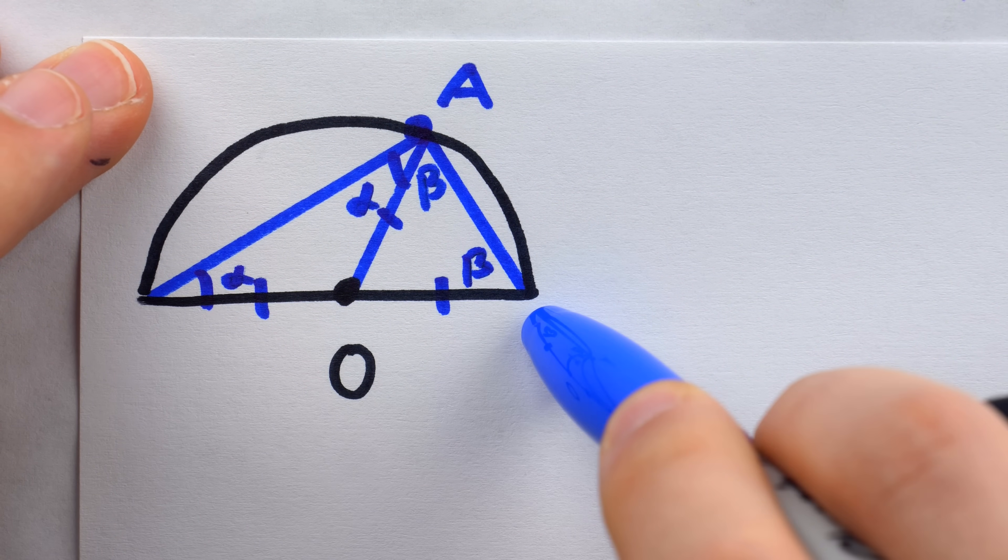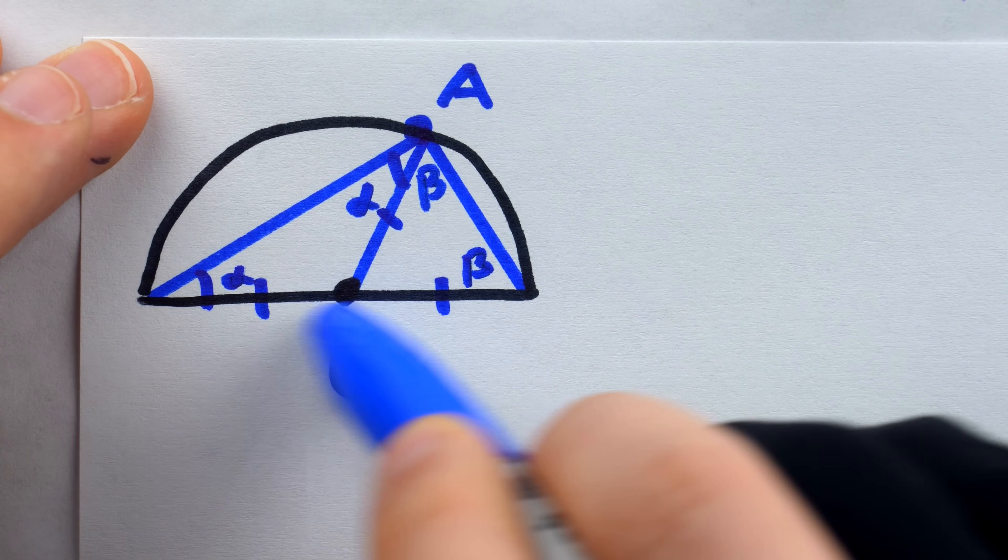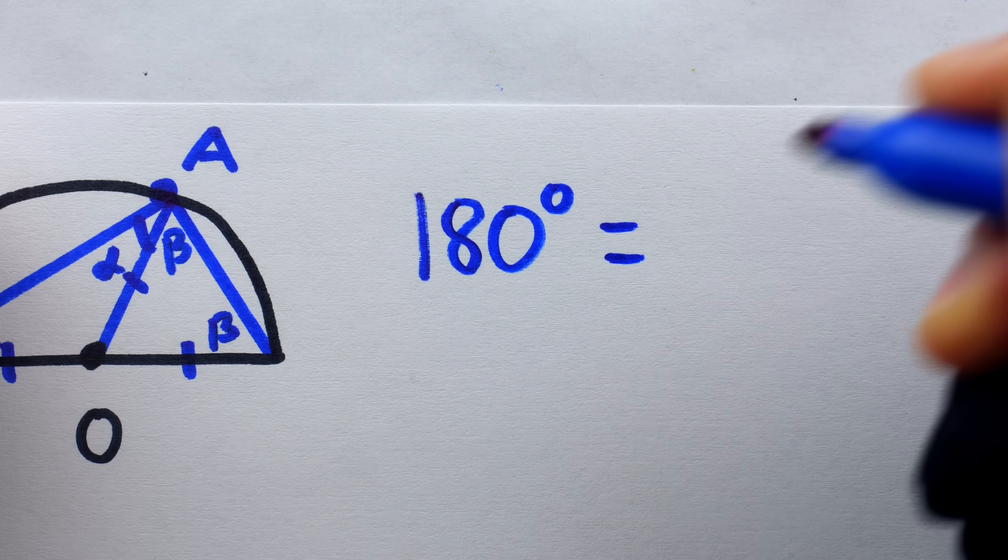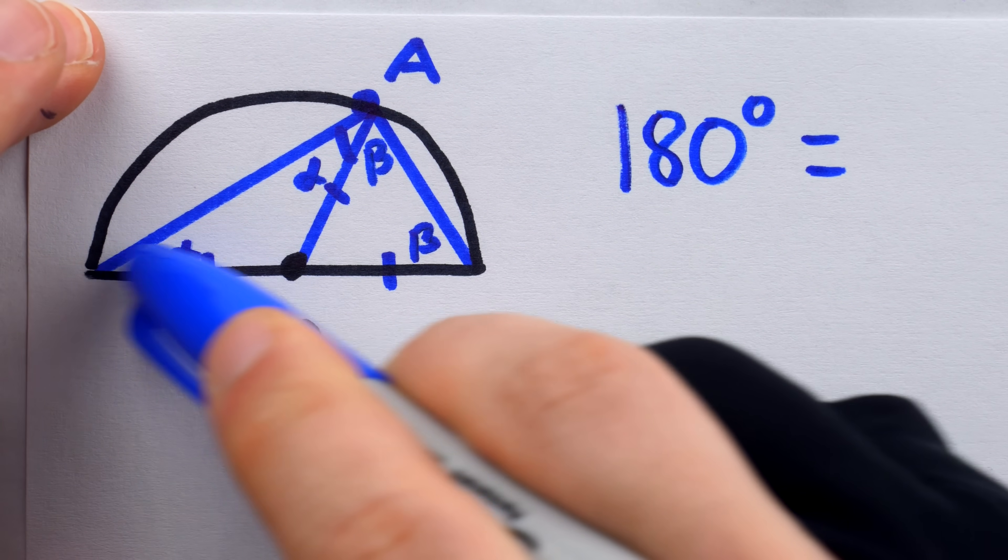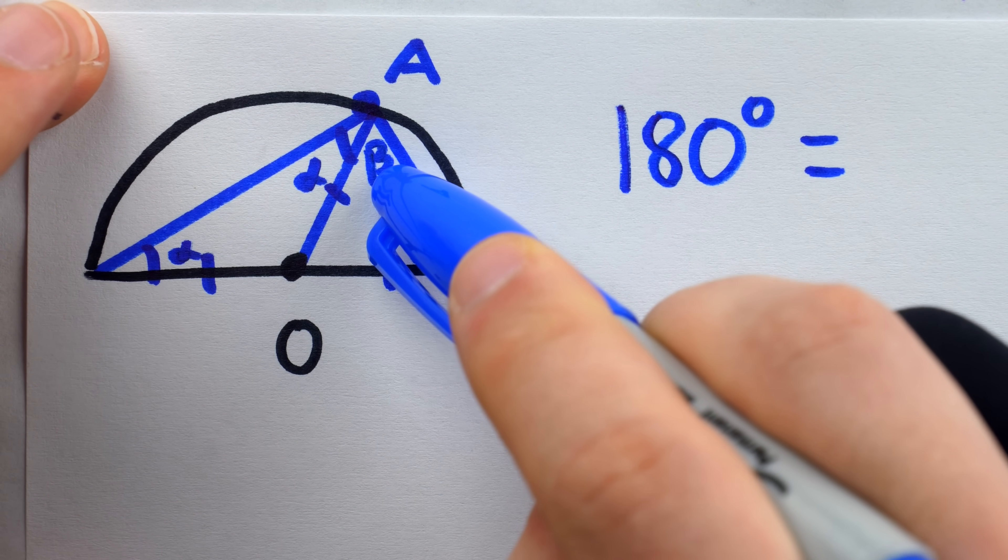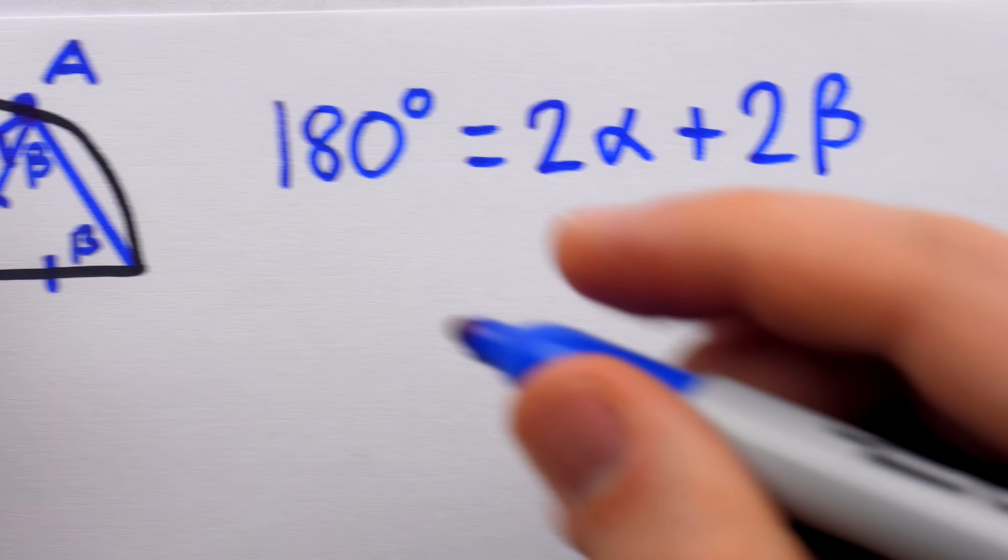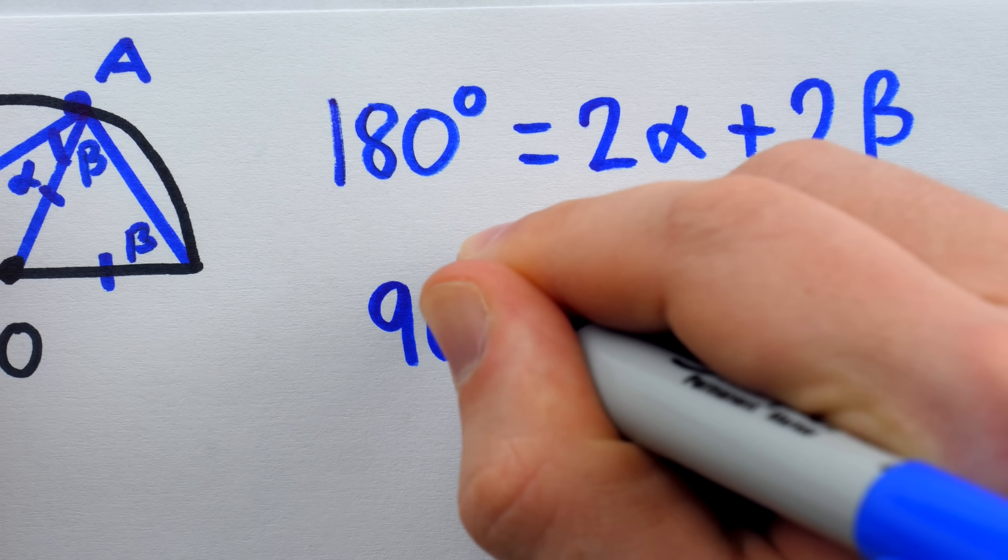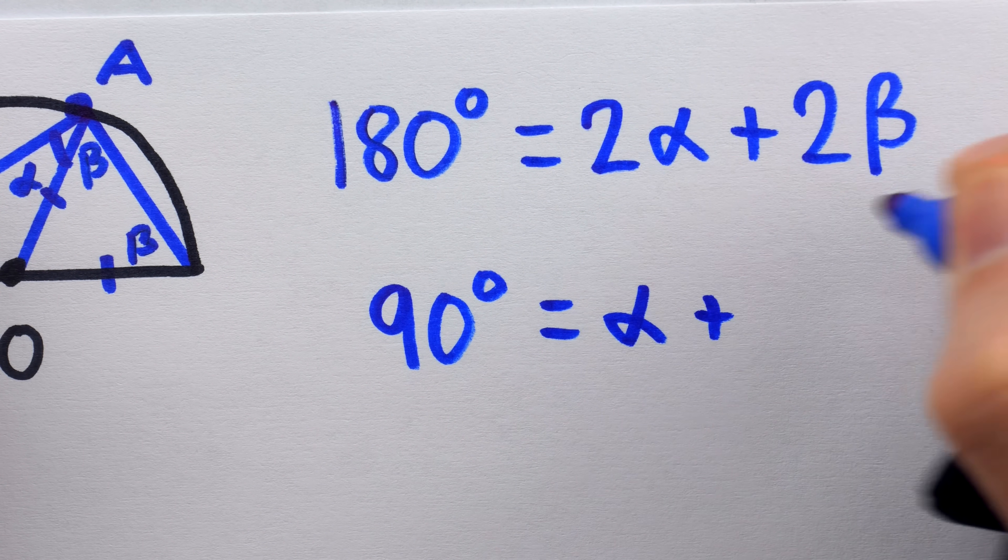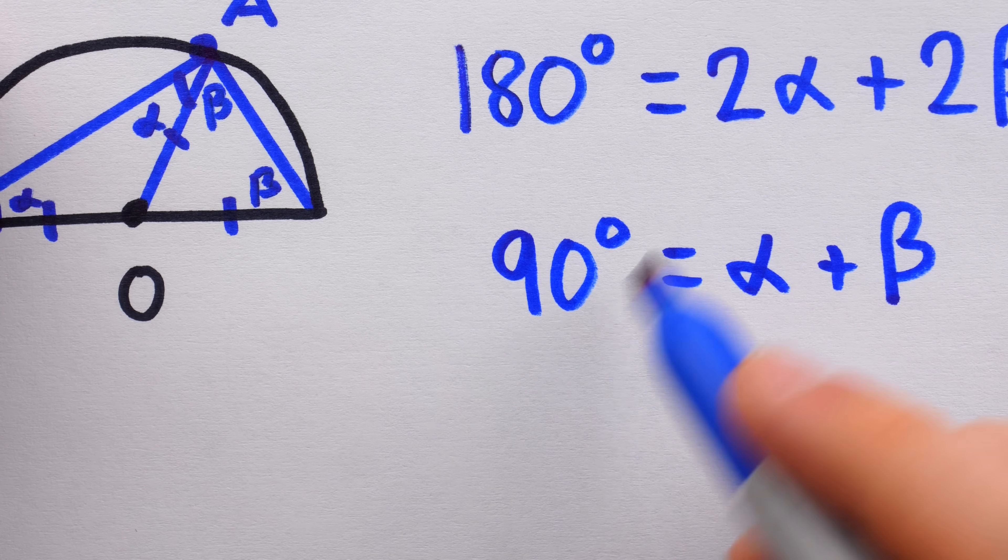Then Thales already knew that the angle sum of this whole big triangle had to be equal to two right angles, which of course is the same as 180 degrees. Now one way to express the angle sum of this big triangle is alpha plus alpha plus beta plus beta, or 2α + 2β. We can then divide both sides of this equation by two to find that 90 degrees is equal to 2α divided by two is α, and 2β divided by two is β. So α + β equals 90 degrees.